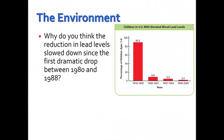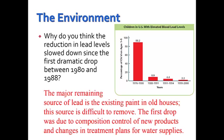Why did the reduction in lead levels slow down after the first dramatic drop between 1980 and 1988? The major remaining source of lead is the existing paint in old houses. The first drop was due to composition control of new products and changes in treatment plans for water supplies. However, removal of paint from old houses is a much longer, drawn-out, and expensive process.